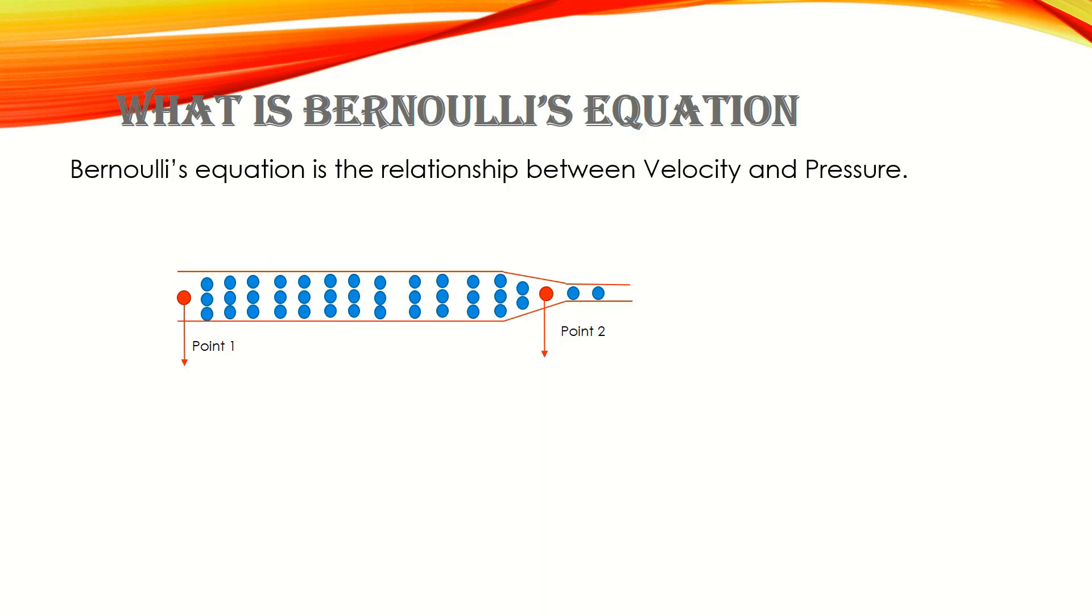Bernoulli's equation is the relationship between velocity and pressure. For example, this is a pipeline and this is the fluid which is moving through the pipeline. We select two points, point number one and point number two. Bernoulli's equation is based on the relationship that energy entering the pipeline will be released from the pipeline. That means energy is conserved. The energy which enters point one will leave from point two.